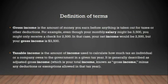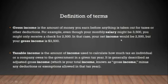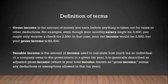Let's proceed to the definition of terms. Gross income is the amount of money you earn before anything is taken out for taxes or other deductions. For example, even though your salary might be $3,500, you might only receive a check for $2,500. Gross income is the term used when taxes, penalties, absences, and tardiness have not yet been deducted.